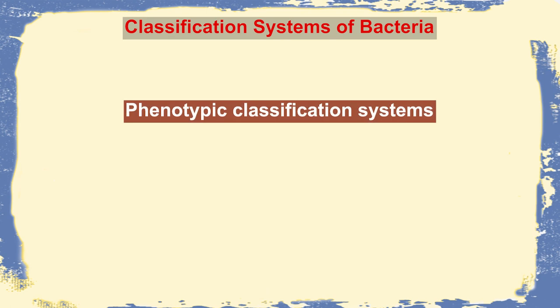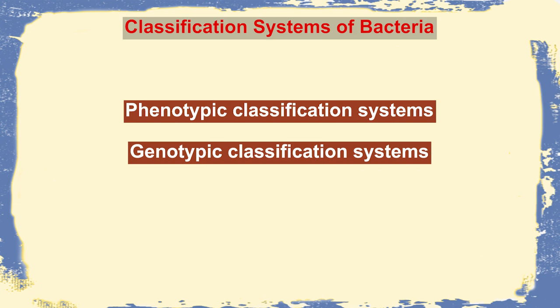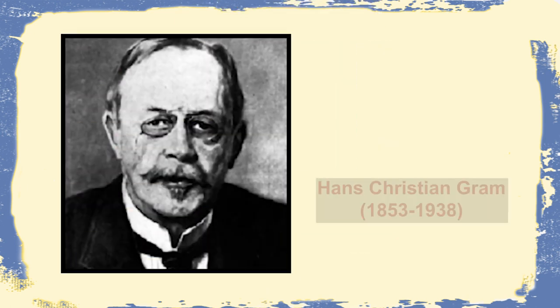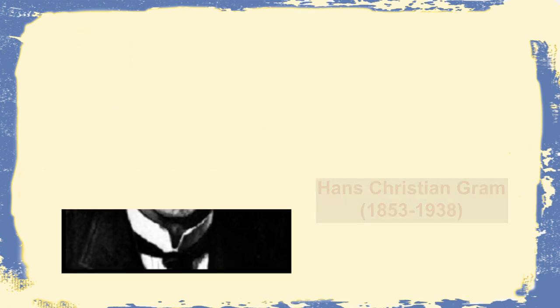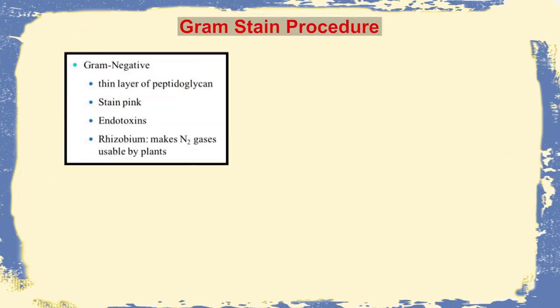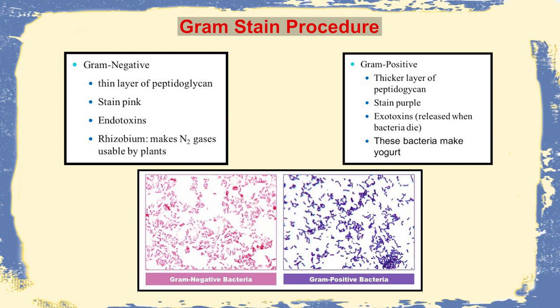We broadly classify bacteria using phenotypic and genotypic classification systems. Among phenotypic methods, the Gram staining method developed by Hans Christian Gram in 1884 won the hearts of the scientific community. It classified clinically relevant bacteria as Gram-positive and Gram-negative based on differences in cell wall characteristics. Gram-positive bacteria have a thick peptidoglycan layer and retain the first stain, appearing purple. Gram-negative bacteria have a thin peptidoglycan layer, lose the primary stain, and appear pink using the secondary stain safranin.